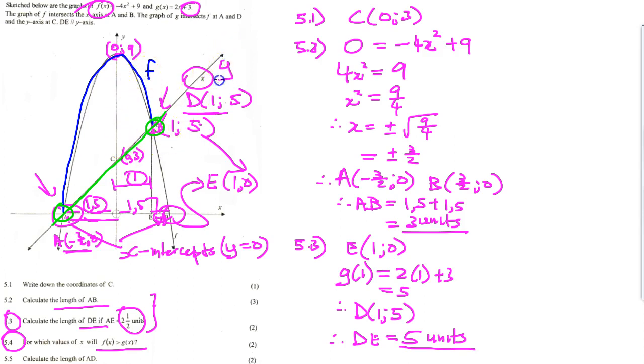So we write our answer as follows for 5.4: x must be greater than this x-value which is -3/2, and less than this x-value which is 1.